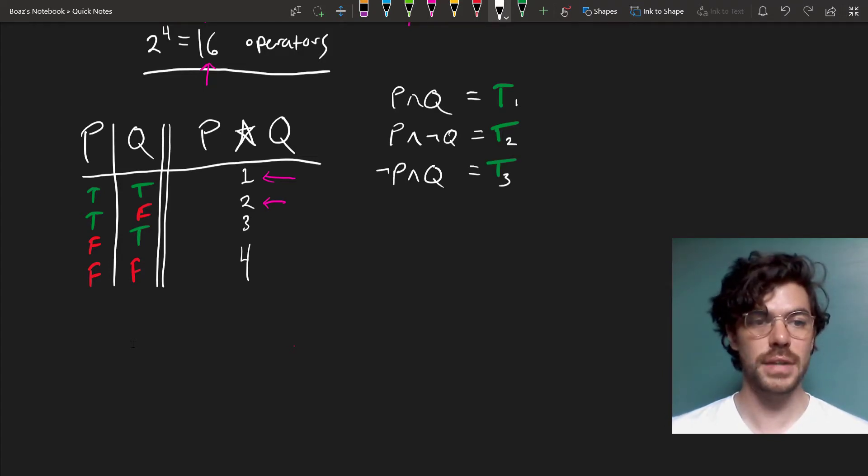For our third value, we have NOT P AND Q. Since this will come out false in all the rest, except here where P is false, and so the NOT here flips the P, making it true, and then we have true, true.